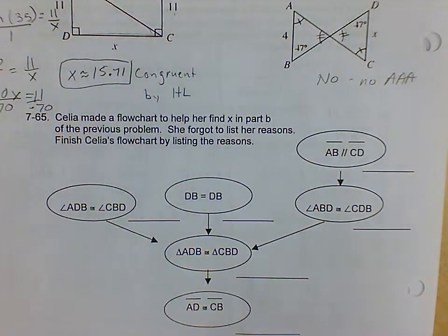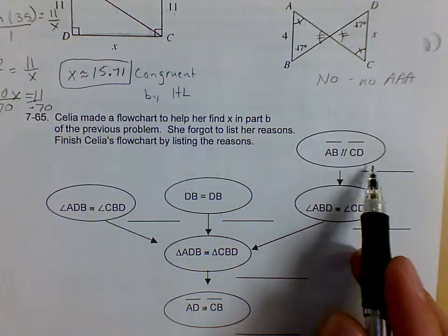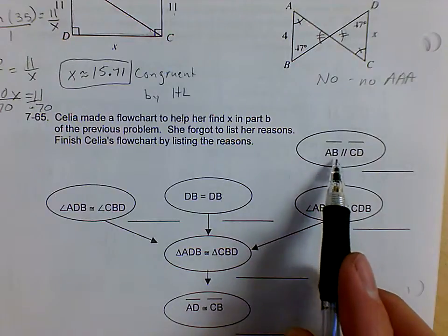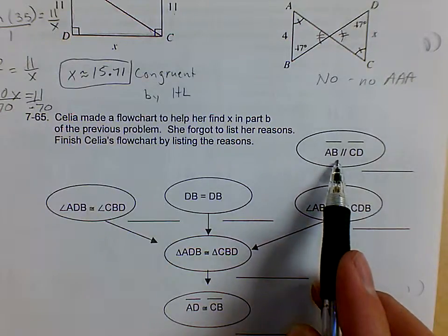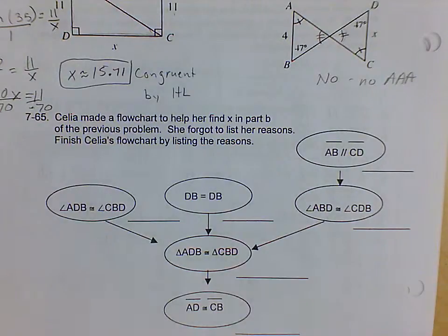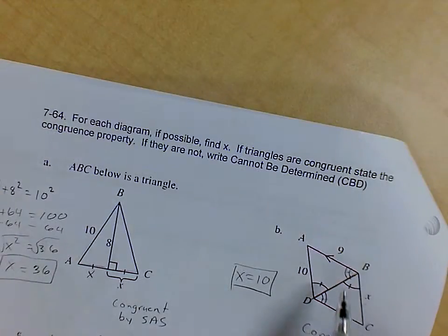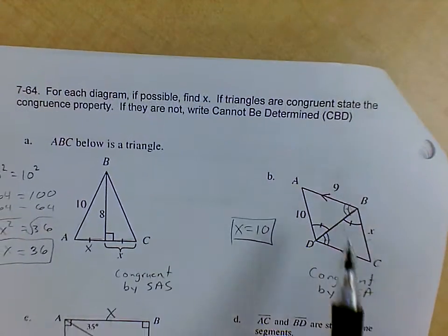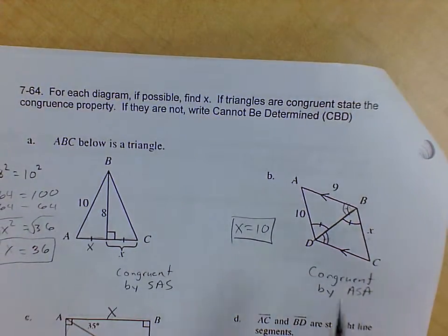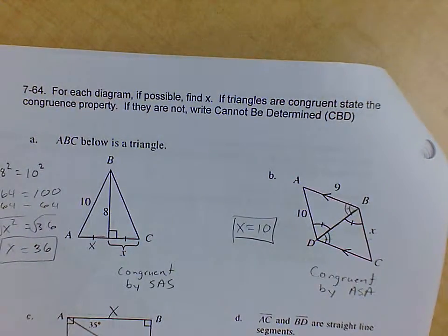So AB is parallel to CD. So why is this parallel? Go ahead and answer that question. Why is this parallel? And our reason for that is given. So we can see that AB has the arrow marked. So that was given to us that they are parallel.